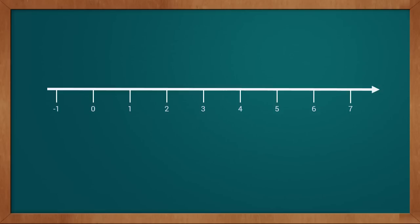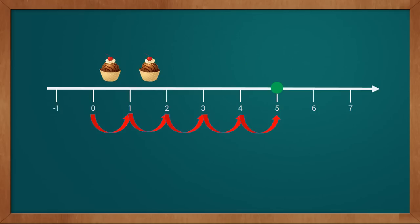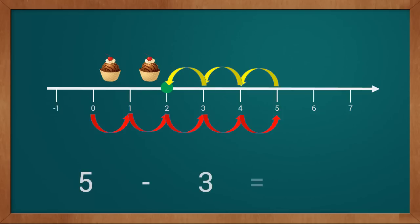We will say it once again with the help of cupcakes. We draw five cupcakes on the number line: one, two, three, four, five — we reached five. Now you gave three cupcakes to your friend, so we remove three cupcakes by counting backwards from five: one, two, three. We removed three, so now we have two cupcakes. So five minus three equals two.